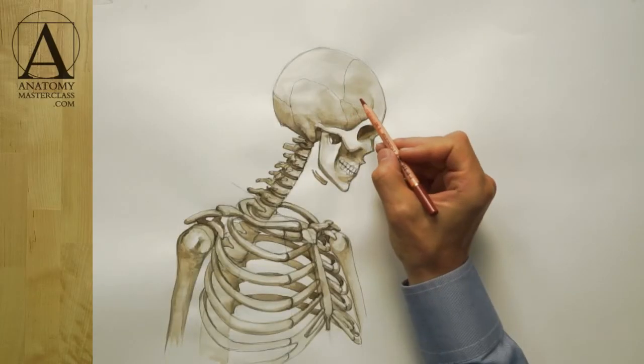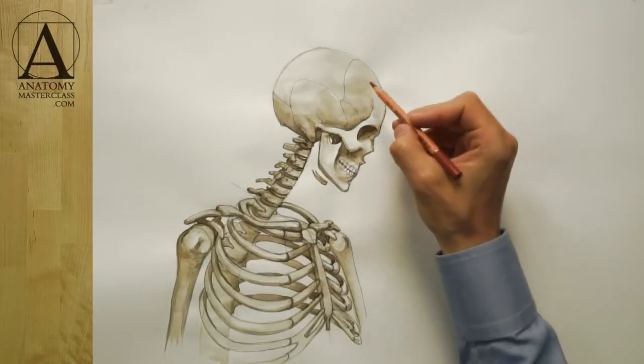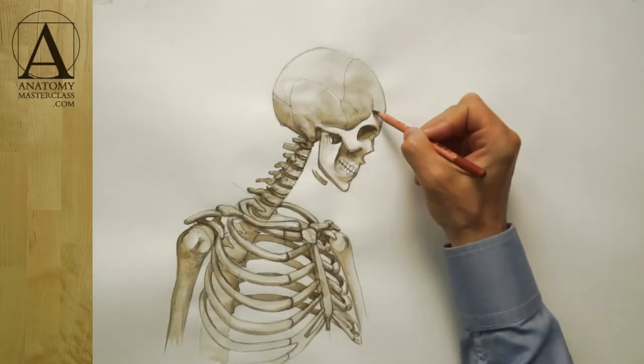In this video lesson, you will find out the main muscles of the human head, neck, and shoulders. We begin with the muscles of the human head.